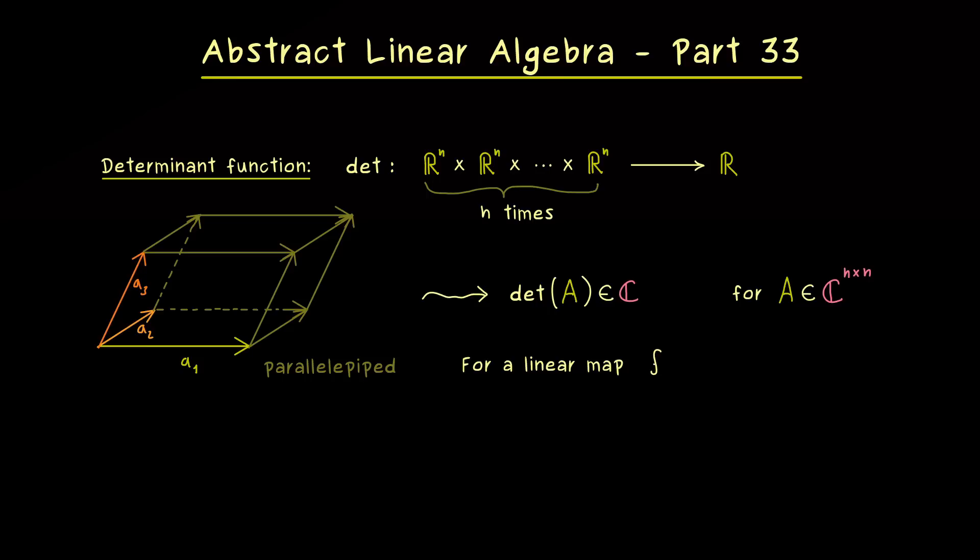And in the first step for that, we can just consider a linear map FA from CN to CN. This means it's completely represented by a square matrix A. Therefore, we don't have any problem for the definition of the determinant of this linear map. We just take it to be the determinant of the matrix that represents it.